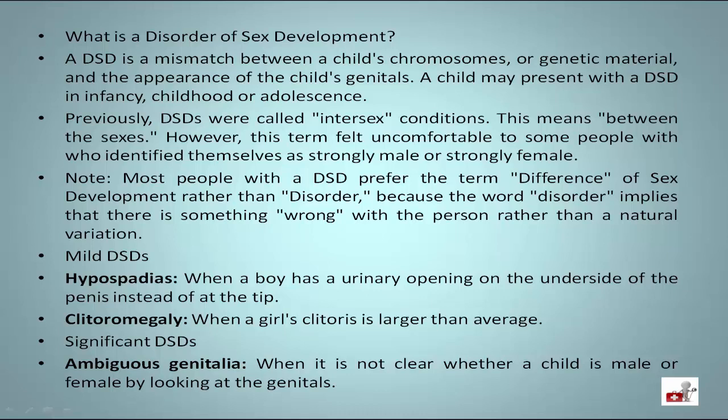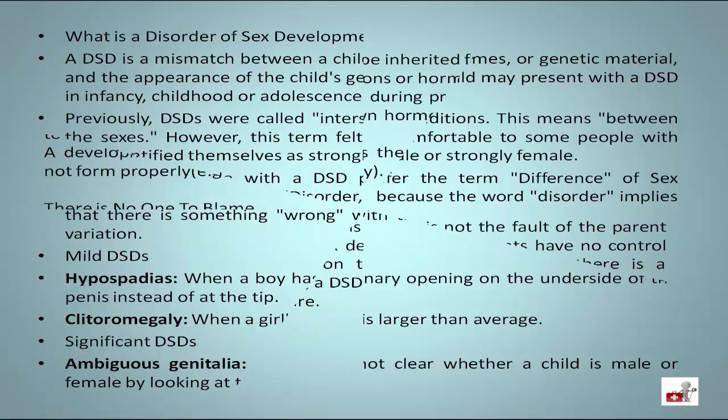Mild DSDs include hypospadias, when a boy has a urinary opening on the underside of the penis instead of at the tip, and clitoromegaly, when a girl's clitoris is larger than average. Significant DSDs include ambiguous genitalia, when it is not clear whether a child is male or female by looking at the genitals.